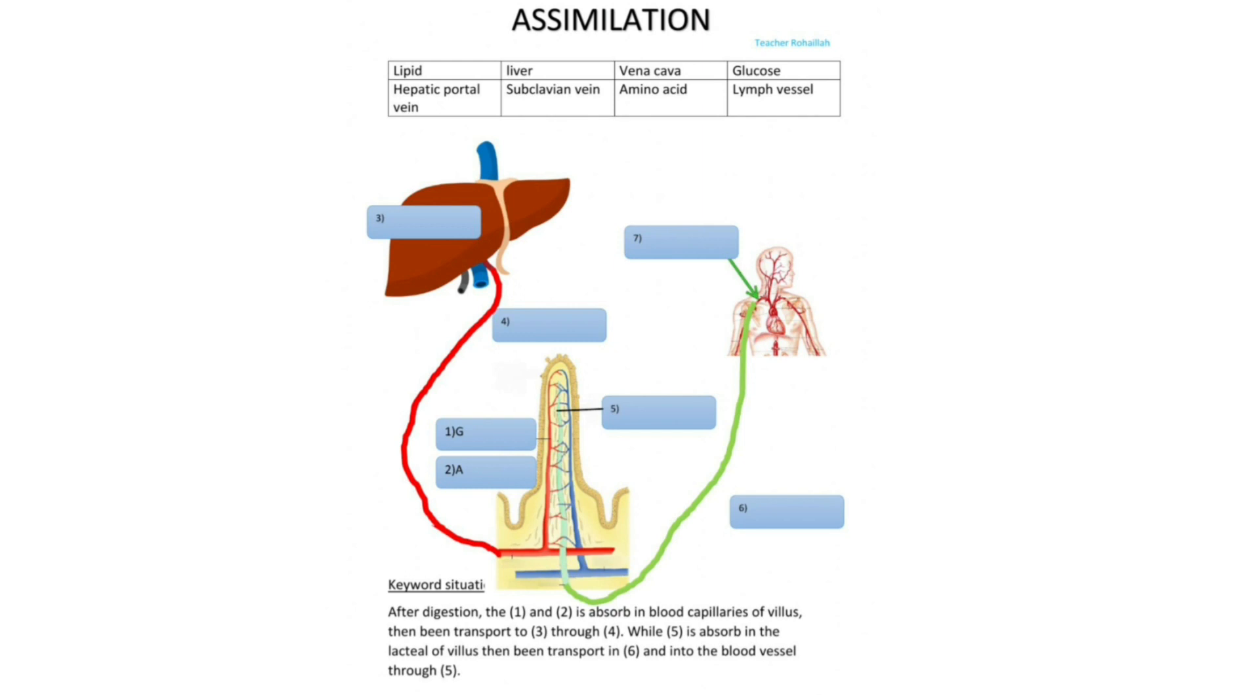After digestion, 2a and 2b are absorbed in the blood capillaries of villi, then being transported to part 3 and part 4. Part 3 and part 4 are, you can see, the hepatic parts.